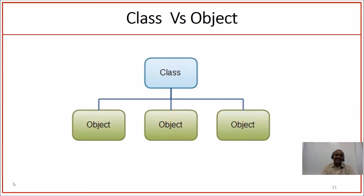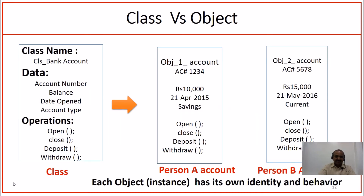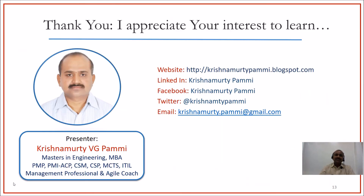If you want to understand the relationship between class and object — class gives birth to objects. Class is the blueprint for the objects that get instantiated out of it. Coming to our example, object 1 and object 2 are instantiated out of the class called bank account class, and each of these objects are unique in their existence. Friends, it is very important to understand the difference between class and object because in software engineering we deal with classes and objects quite frequently. Thank you.